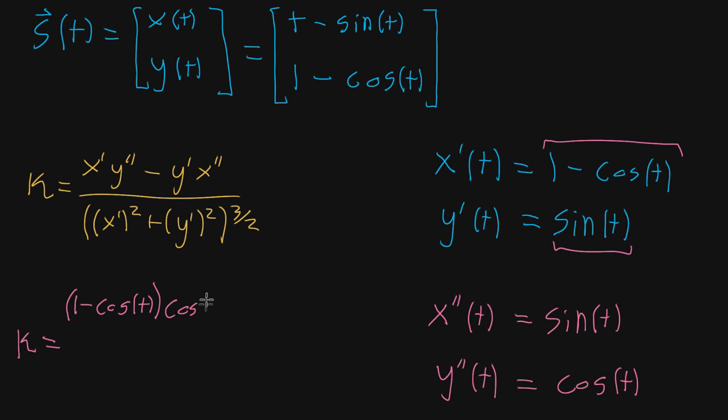One minus cosine of t. We subtract off from that y prime, which is sine of t, sine of t multiplied by x double prime, so x double prime is also sine of t. So I could just say sine of t squared.